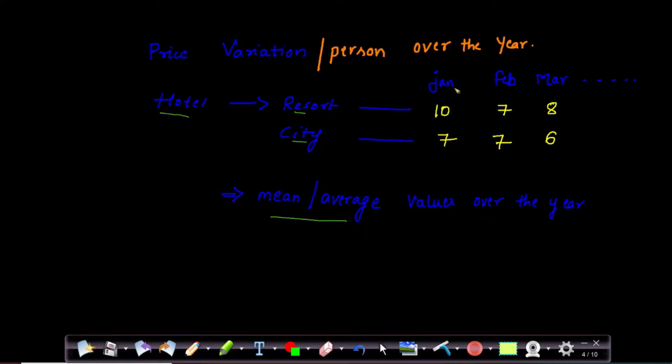For example, say suppose in January, resort hotel is having 10 as average. This is just an example. 10 and in February 7, March 8, so on. In city, it is having 7, Feb is 7, March is 6.